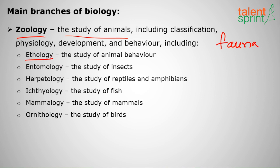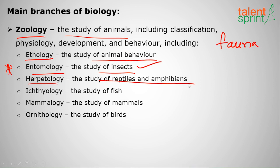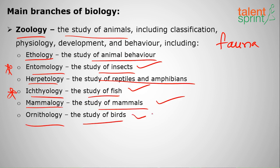There are subtopics in zoology that are very important for examinations. Ethology is the study of animal behavior. Entomology — a very repeated question — is the study of insects. Herpetology is the study of reptiles and amphibians, which live on both land and water. Ichthyology is the study of fish. Mammology is the study of mammals. Ornithology is the study of birds.